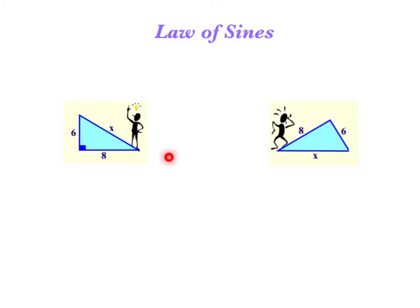Notice there's something very different about this triangle and this triangle. Hopefully you're saying to yourself, I can easily get the other side because this is a right triangle. If I know two sides of a right triangle, I can easily use the Pythagorean theorem to get the missing side.